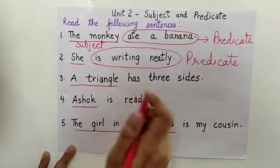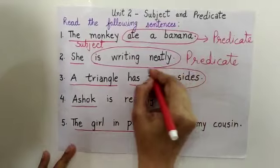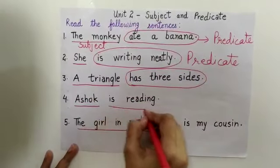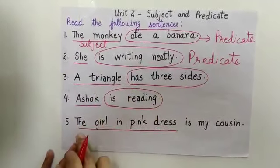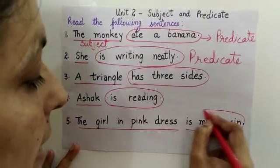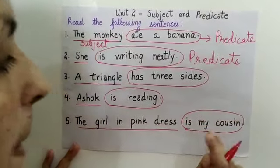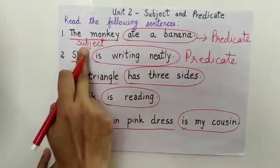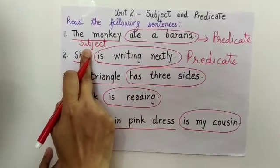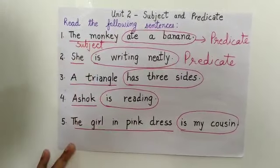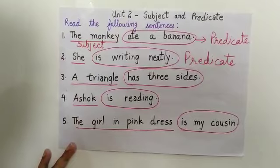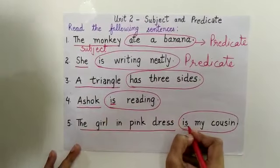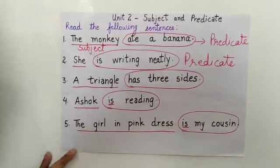Same with the third — 'has three sides' is the predicate. Fourth, 'is reading' is the predicate. And in the last sentence, 'is my cousin' is the predicate. To repeat: the predicate always tells us about the subject and what the subject is doing, and it always contains a verb.